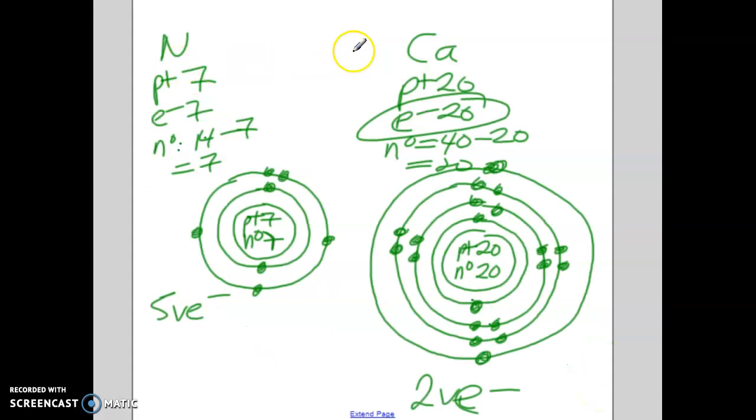So here I'd like you to do the electron dot diagram or the Lewis dot for nitrogen and then for calcium. Okay, so nitrogen, there's five valence electrons. We're going to follow the same pattern. One, two, three, four, five. There you go. Calcium. Calcium has two valence electrons. Calcium, one, two. Done.